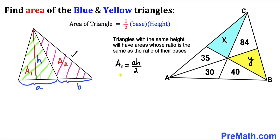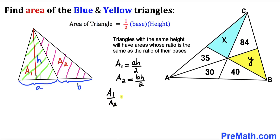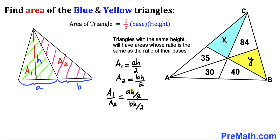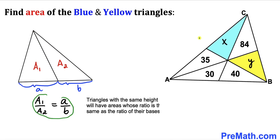For the right-hand triangle, area a₂ equals (b × h) / 2. Taking the ratio a₁ / a₂, we get (ah/2) divided by (bh/2). The h/2 terms cancel, so the ratio a₁ / a₂ = a / b. We will use this concept to solve the given problem.